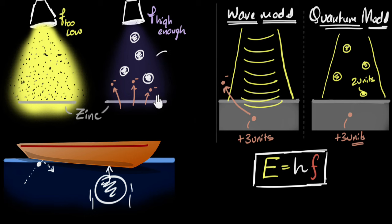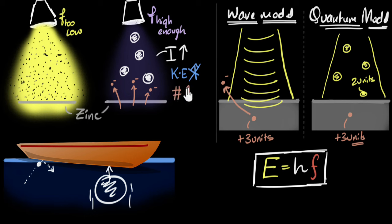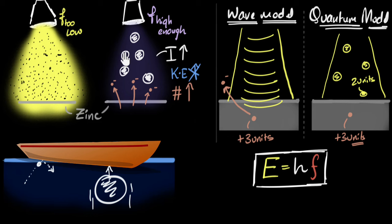One result we saw is that increasing the intensity of light does not increase the kinetic energy of electrons — instead, we get more electrons coming out. When you increase intensity, you don't change the energy of individual photons, so an electron absorbing that photon gains the same energy as before. But increasing intensity does increase the number of photons, so more electrons receive photons and more electrons come out per second. That makes sense.